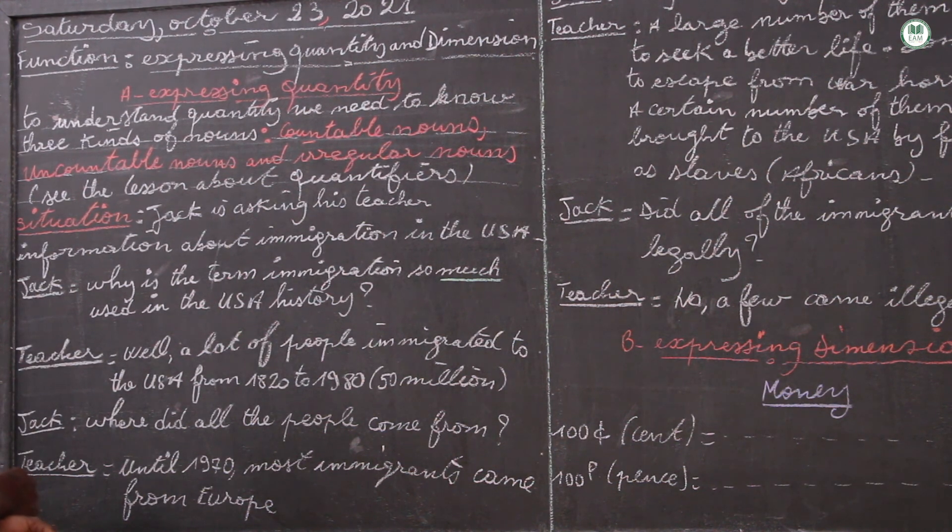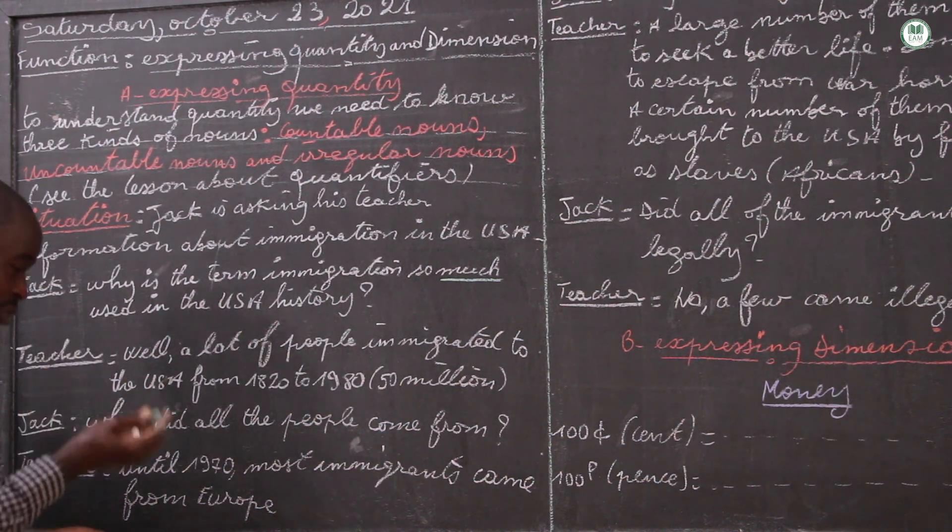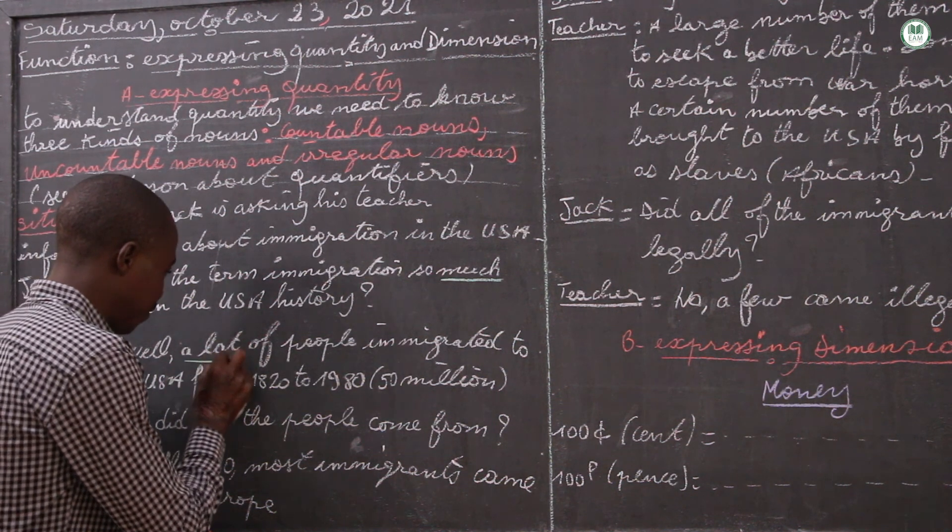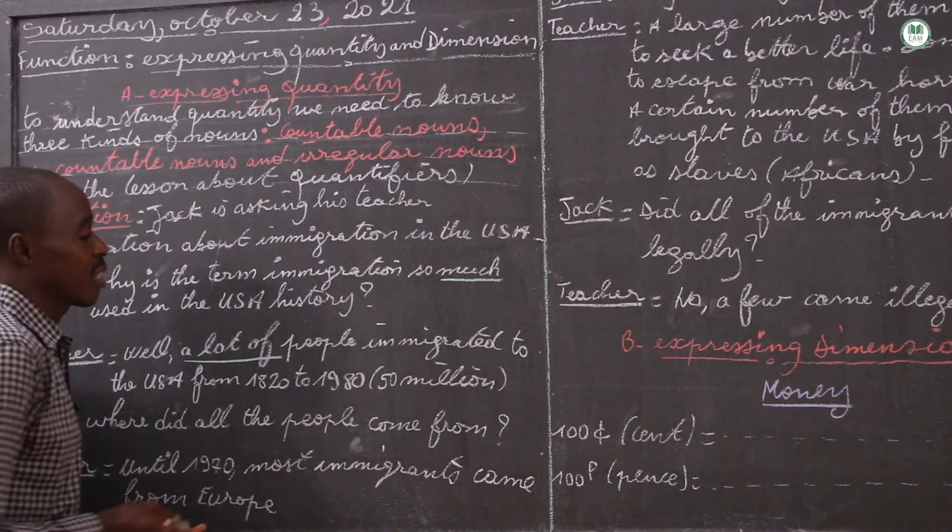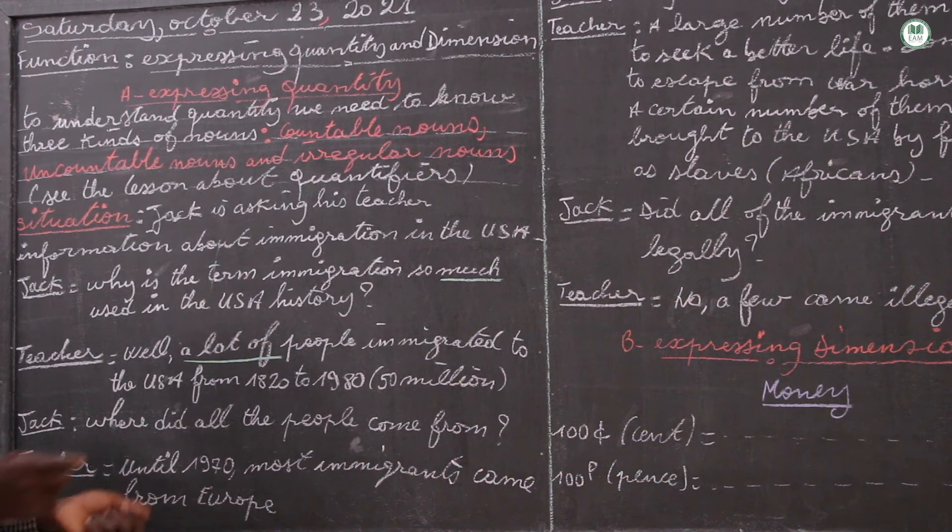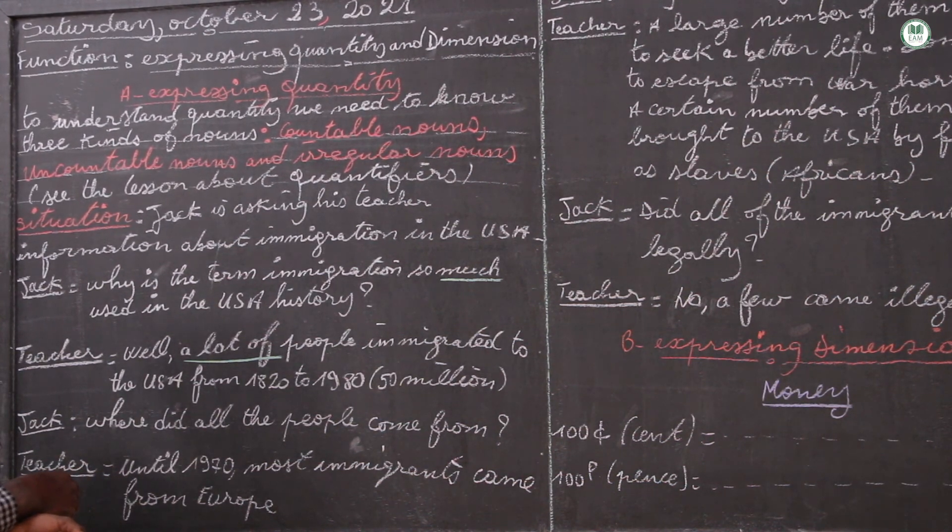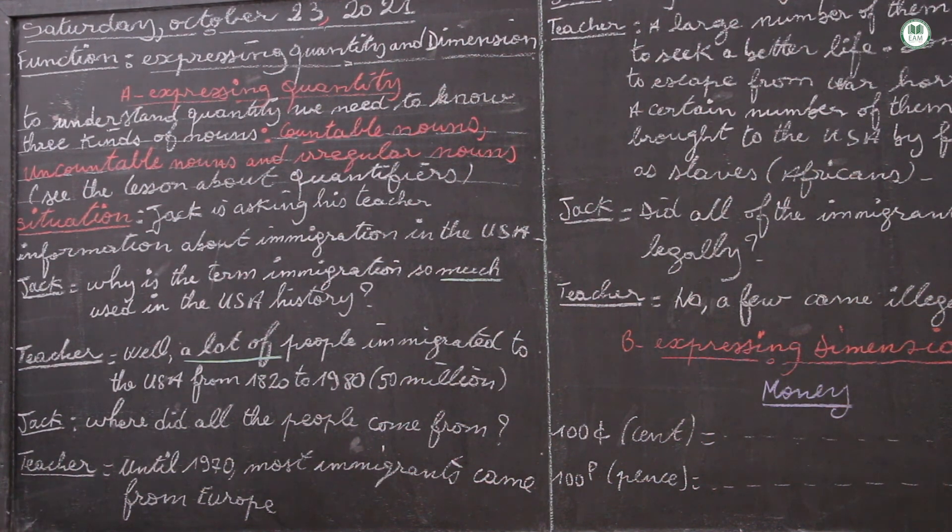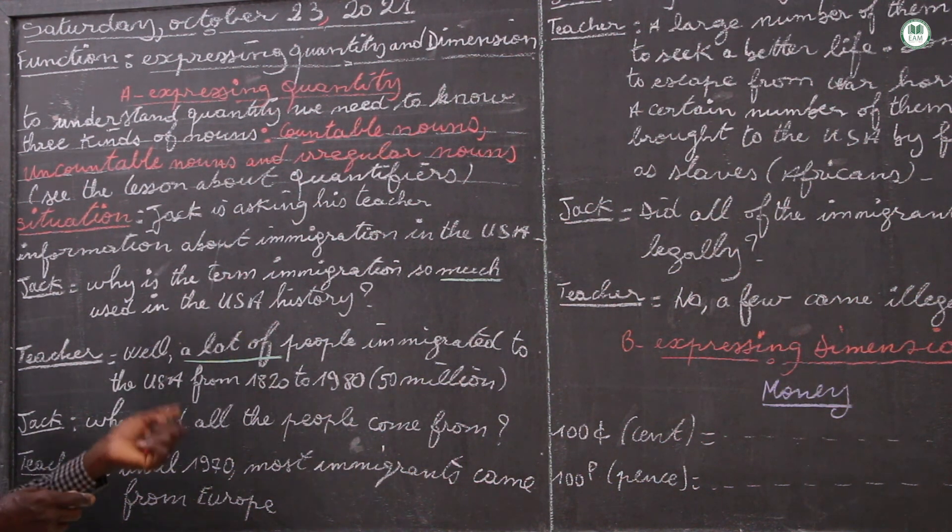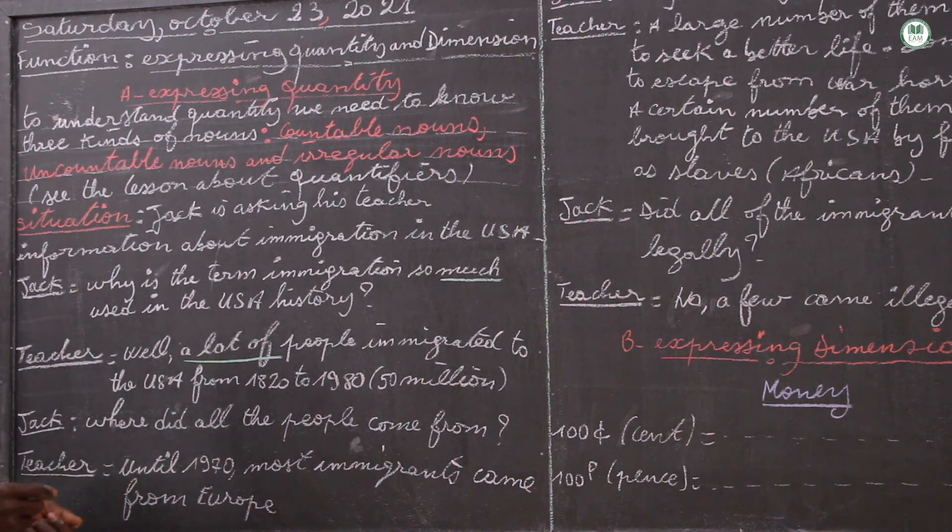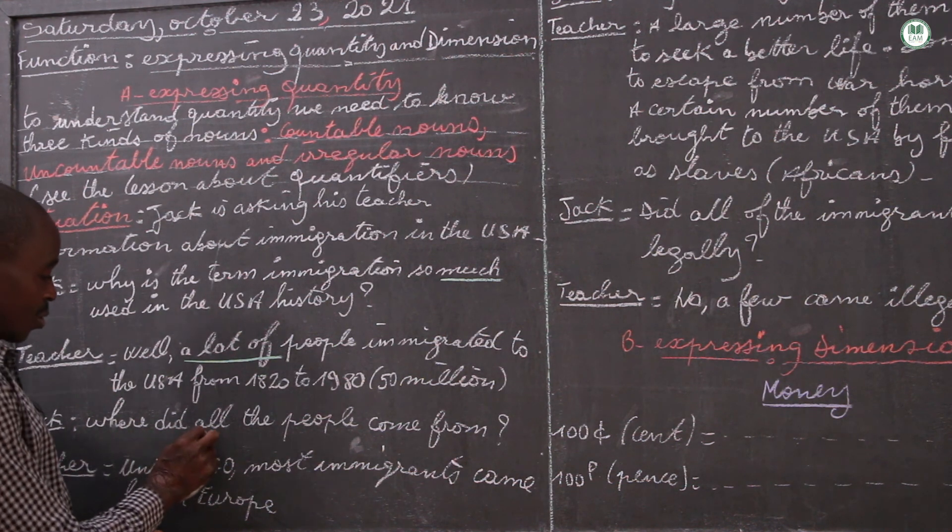And the teacher is answering: well, a lot of people - we have a case of irregular noun here, a lot of people is irregular, this is what it is - immigrated to the USA from 1820 to 1980. This is the time period.